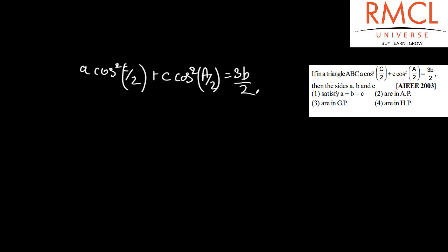We know that the formula for cos²(C/2) in terms of cos C is (1 + cos C)/2. And similarly for cos²(A/2), it is (1 + cos A)/2.